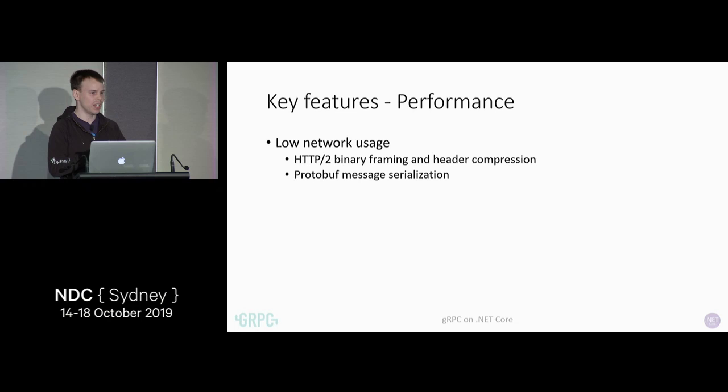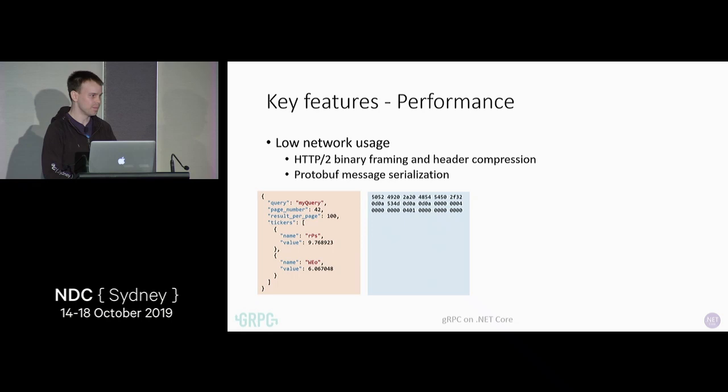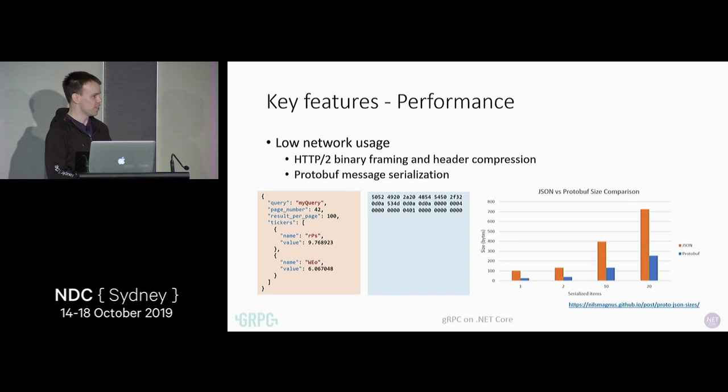Let's imagine some JSON with some equivalent protobuf. We've got some JSON on the left and an equivalent protobuf contract on the right. These look about the same size, but the contract isn't what's getting sent — what's getting sent is some very small and efficient binary. This is a comparison that someone in the community did of JSON versus equivalent protobuf, and protobuf is between a quarter and a third the size of JSON, which is a significant saving.